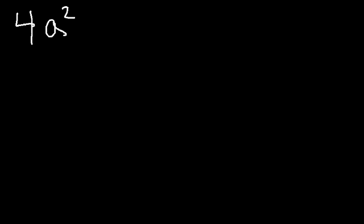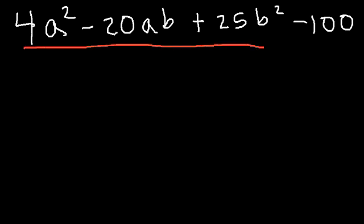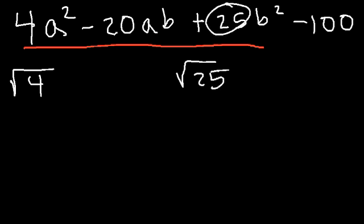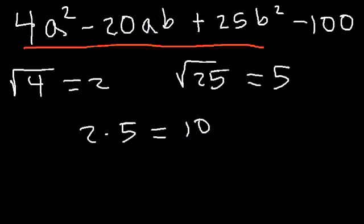Now let's try another problem: 4a squared minus 20ab plus 25b squared minus 100. Take a minute to see if you can factor this. For the first three terms, let's check if it's a perfect square trinomial. The square root of 4 is 2 and the square root of 25 is 5. Multiplying 2 times 5 gives 10, which is half of 20 — so yes, it is a perfect square trinomial.